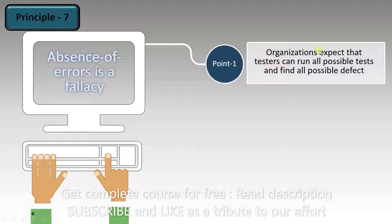Point 1: In an organization, it is expected that testers can run all possible tests and find all possible defects. This expectation is completely wrong. We can't run all possible tests, and we cannot find all possible defects.